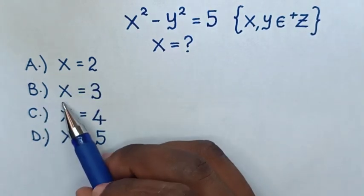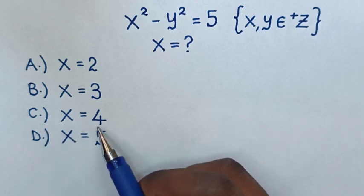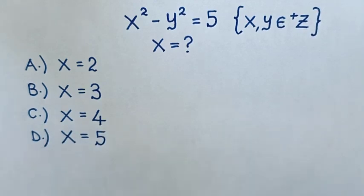by selecting between the answers: A) x equals 2, B) x equals 3, C) x equals 4, D) x equals 5. Now,